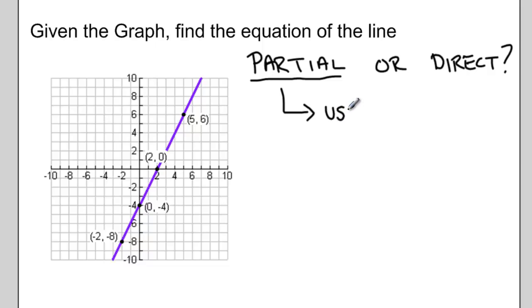Which means when we're finding the equation of the line, we're going to use y equals mx plus b. m is the slope.